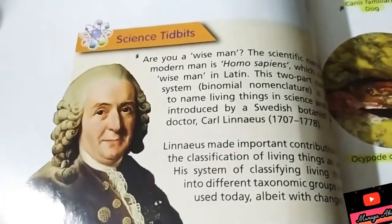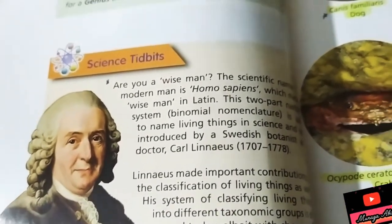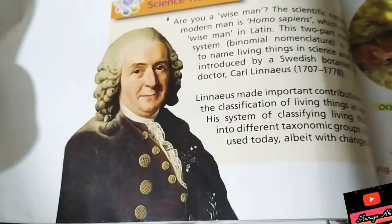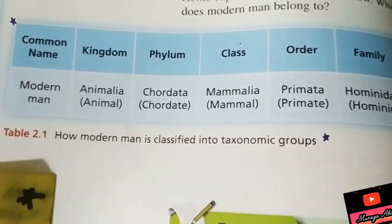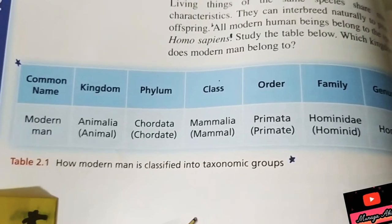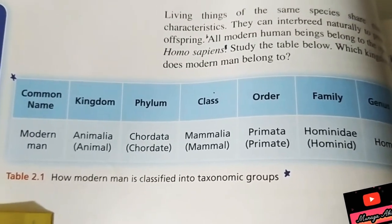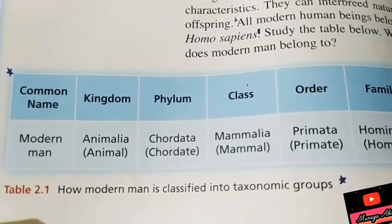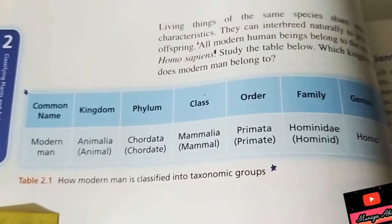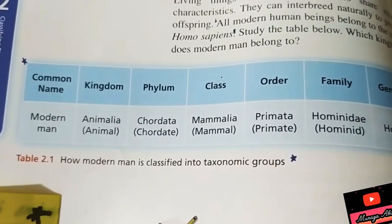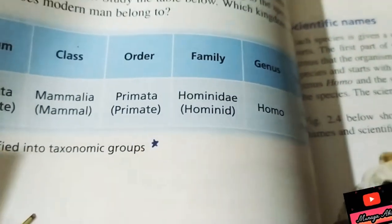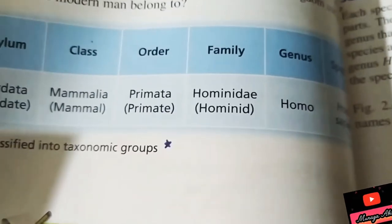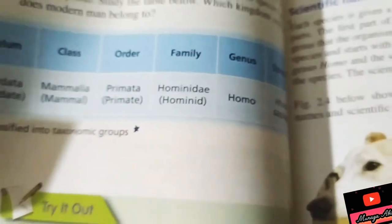Linnaeus was the scientist who classified living things. On page 30, your own classification is shown. Our scientific name is Homo sapiens and our common name is 'modern man'. Our domain is Eukarya, our kingdom is Animalia, our phylum is Chordata, our class is Mammalia, our order is Primates (Primata), and our family is Hominidae.